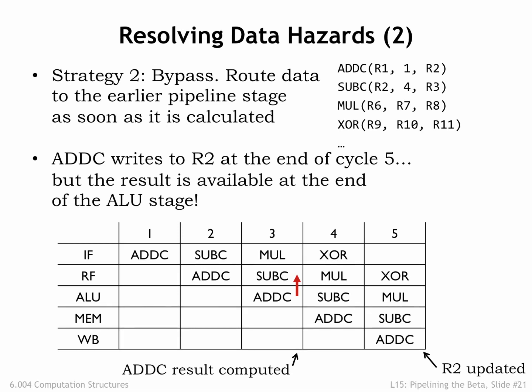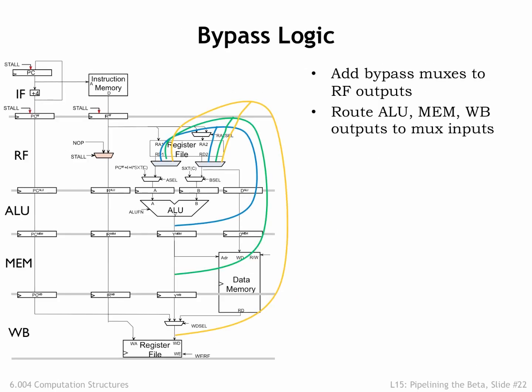In our example, in cycle 3, we want to route the output of the ALU to the RF stage to be used as the value for R2. We show this with a red bypass arrow, showing data being routed from the ALU stage to the RF stage. To implement bypassing, we'll add a many-input multiplexer to the read port of the register file so we can select the appropriate value from other pipeline stages. Here we show the combinational bypass paths from the ALU, MEM, and WB stages.